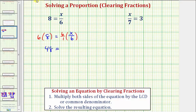On the right, before multiplying, we simplify. Six divided by six simplifies to one. So we just have one times x or x. And therefore, our solution is x equals 48.